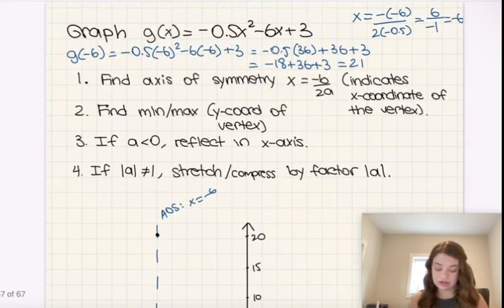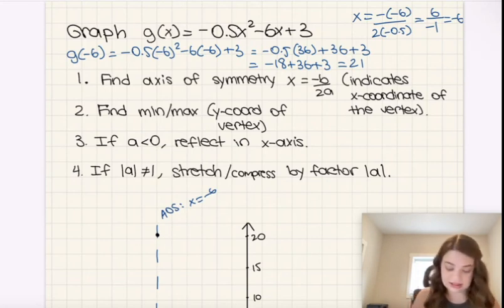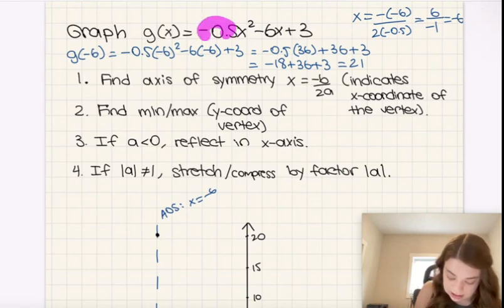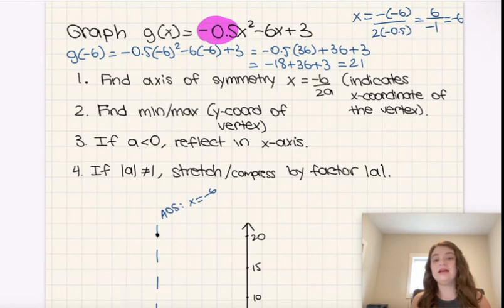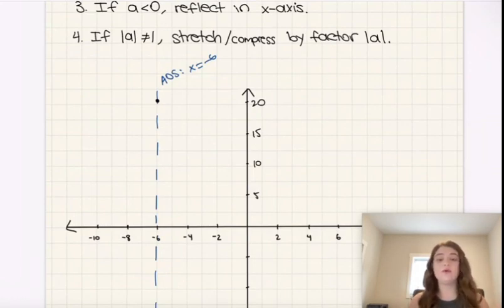The next thing we need to do is we need to check if a is less than 0, and if a is less than 0, or in other words, if a is a negative number, that means we need to reflect in the x-axis. Now keep in mind, the a value just means the leading coefficient in this case, so that's going to be negative 0.5, and that is indeed less than 0, that is indeed a negative number. So that means that yes, we will be reflecting, we will be doing a reflection, and that means that the parabola is going to be opening down instead of opening up.